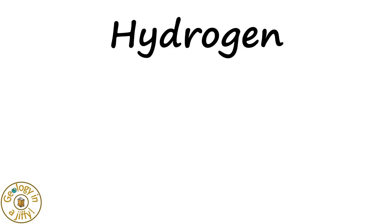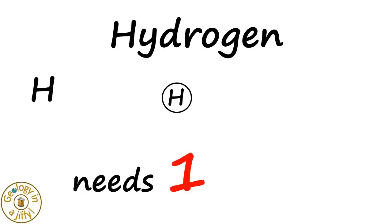So hydrogen, with the symbol capital H, can be shown as a white ball. To be stable, hydrogen needs one more. So let's say the hydrogen needs one more friend and so has a hand trying to hold on to that friend.